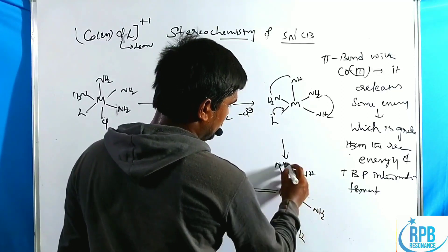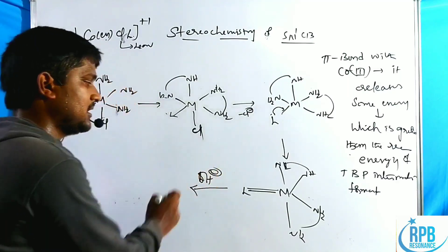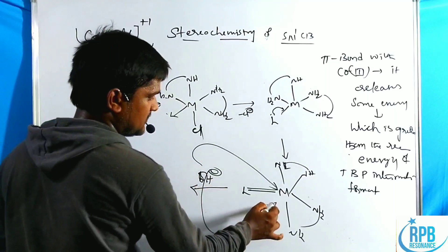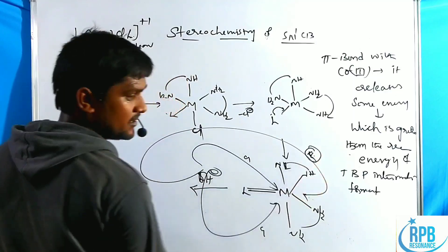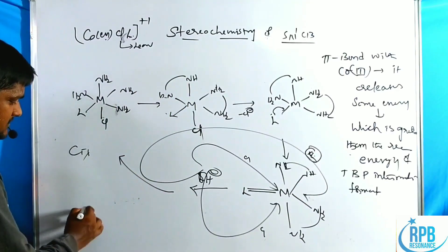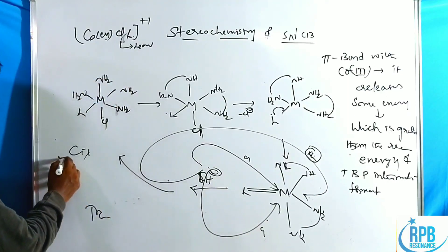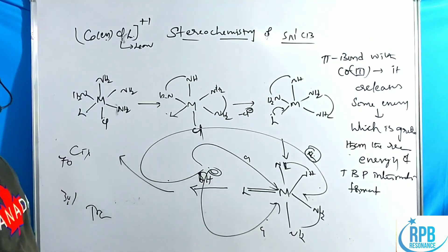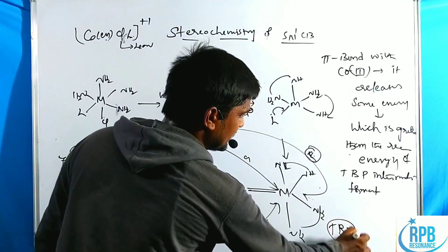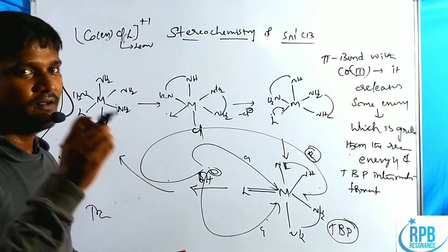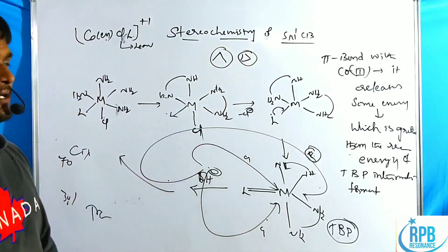In the trigonal bipyramidal intermediate, the incoming ligand can attack from either of two sites (giving cis products) or from the back side (giving a trans product). This results in approximately 70% cis and 30% trans products — a mixture of compounds is observed. This leads us to discuss specific examples involving lambda (Λ) and delta (Δ) complex formation.